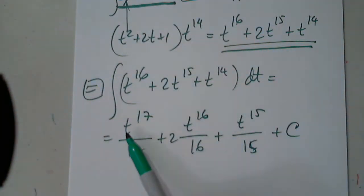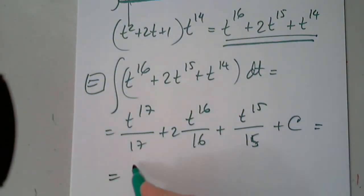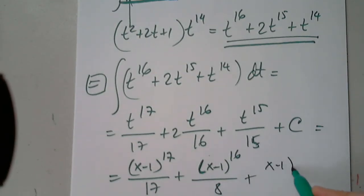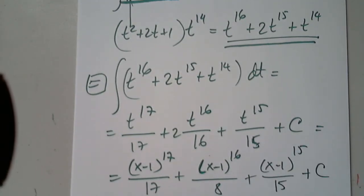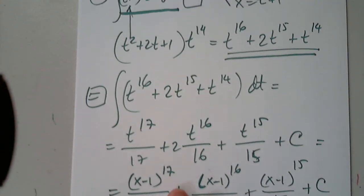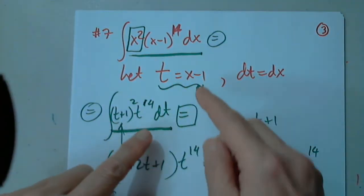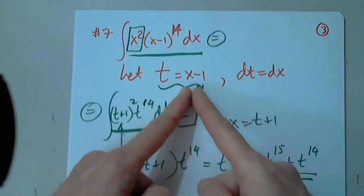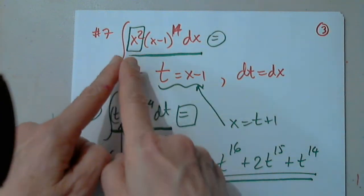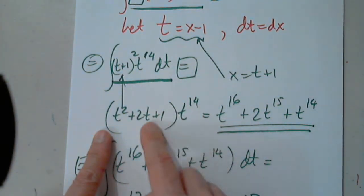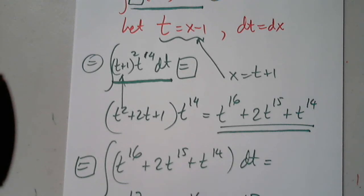So the integral of t to the 16th plus 2t to the 15th plus t to the 14th dt gives t to the 17th over 17 plus 2t to the 16th over 16 plus t to the 15th over 15 plus C. But I have to replace t with x minus one. So: x minus one to the 17th over 17, simplified as x minus one to the 16th over 8, plus x minus one to the 15th over 15 plus C. The key was replacing all x with t, then solving x equals t plus one, squaring it to get three easy terms and distributing t to the 14th.